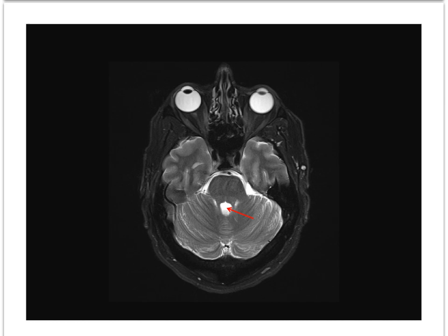Moving further cephalad, we can see the rostral portion of the 4th ventricle. Its lateral margins are the superior cerebellar peduncles. Here is the posterior lobe of the cerebellar hemisphere and the anterior lobe. The primary fissure of the cerebellum that separates anterior and posterior lobes was better demonstrated on the sagittal.